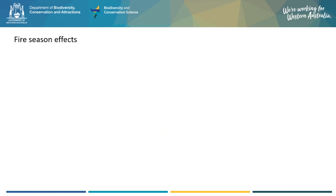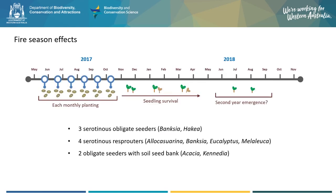Another part of our research is looking at the effects of different fire seasonality — or fires at different times of the year. For my PhD, I ran an experiment where I sowed seeds each month from late autumn to late spring to try to replicate what might happen following fires at these different times. These times are typically when managed fires or prescribed burns occur and where fires might occur more often under climate change in the future. After seed sowing, I recorded seedling emergence for each species and the survival of seedlings over summer. In the second year of the experiment, I also recorded if any new seedlings emerged from seeds that missed the opportunity to germinate in the first year. I focused on several species covering different fire response types to help provide information on how species might respond across the whole plant community.